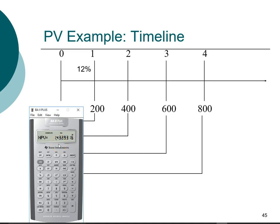Using the financial calculator is a much faster way to solve present value problems with multiple cash flows. For the future value of multiple cash flows, the base model financial calculator does not have that function, as it is a much less common form of calculation. For future value, you must find the future value for each cash flow individually and then add them up.